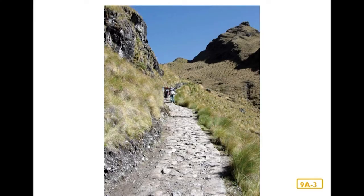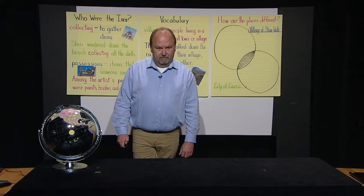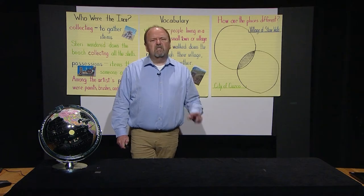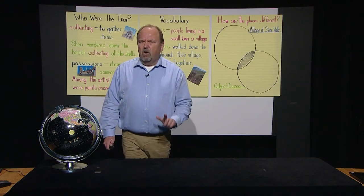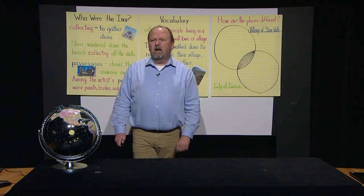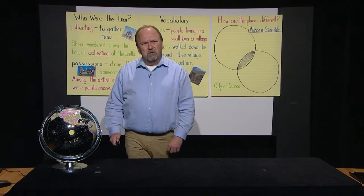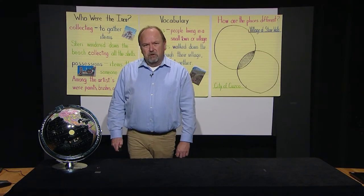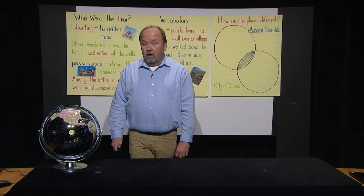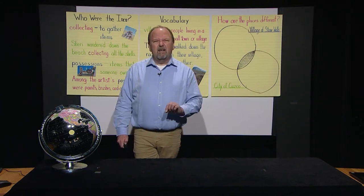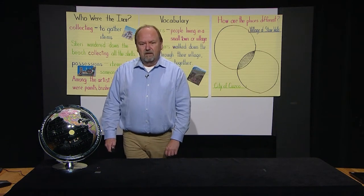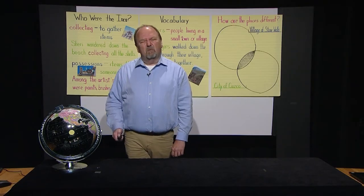The Inca controlled so much land because they conquered other nations of people. Each time they did, the size of their empire would grow. Remember, to conquer is to take over other people against their will and control their land. Just as the Aztec conquered other people and had an empire, the Inca did as well, but in a different way.